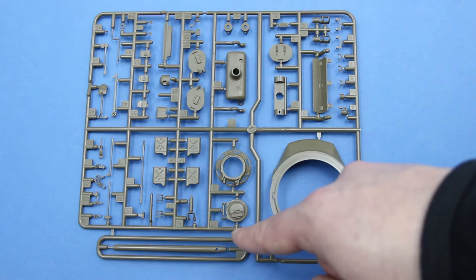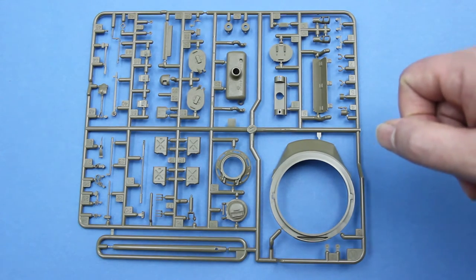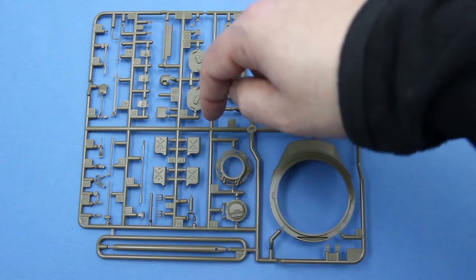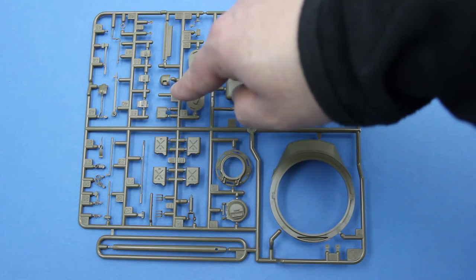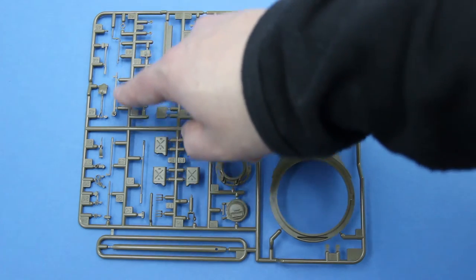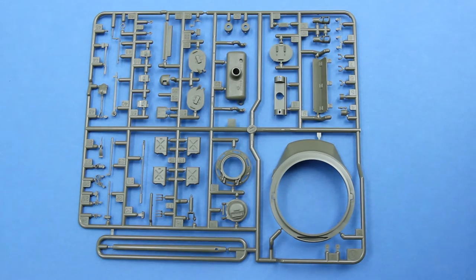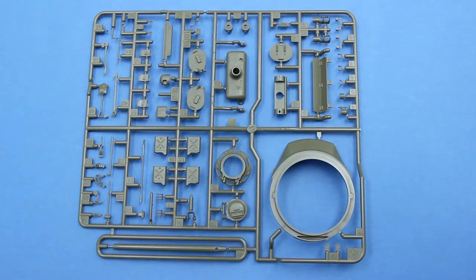Going on here are the gun barrel. Jerry cans. The vent for the back of the turret. Some tools. And that wraps it up for that sprue.